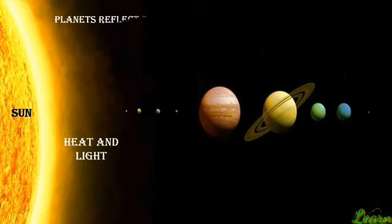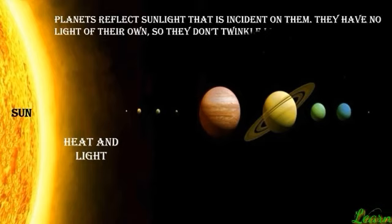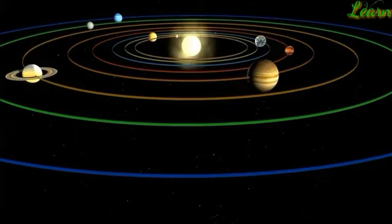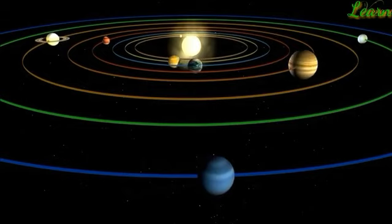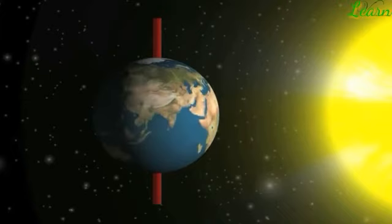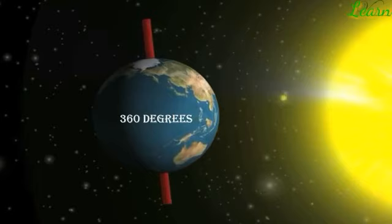Planets in our solar system reflect sunlight that is incident on them. They have no light of their own, so they don't twinkle like the stars. Planets have definite paths called orbits in which they revolve around the sun. The time taken by a planet to complete one full revolution around the sun is called the period of revolution. The time taken by a planet to rotate a full 360 degrees on its axis is called the period of rotation.